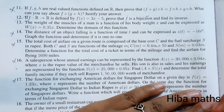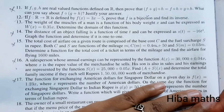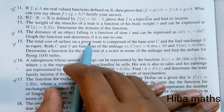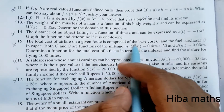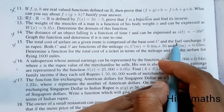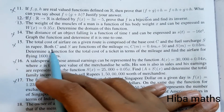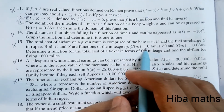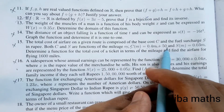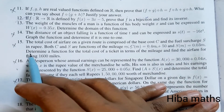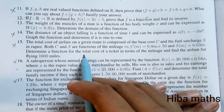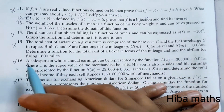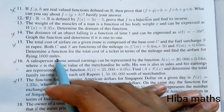Hello students, welcome to Hiba Max 11 standard, Chapter 1, Exercise 1.3, 15th question. The total cost of airfare on a given route is comprised of the base cost C and the fuel surcharge S in rupees. Both C and S are functions of the mileage M. C of M equals 0.4M plus 50, and S of M equals 0.03M. Determine a function for the total cost of a ticket in terms of mileage and find the airfare for flying 1600 miles.